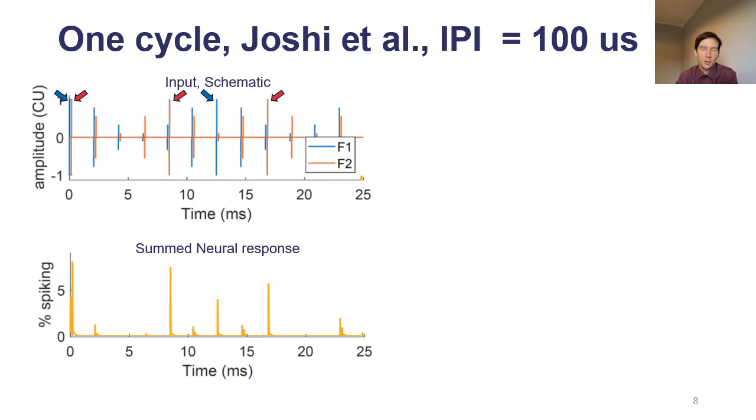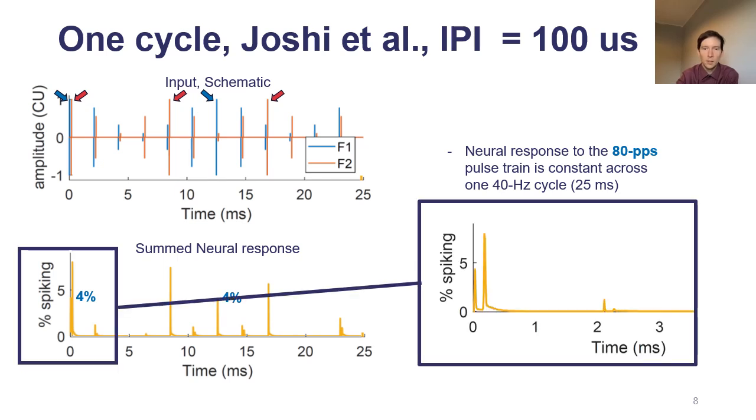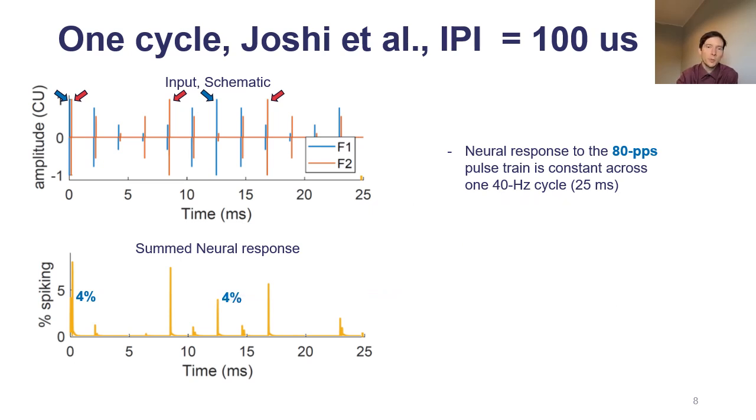For the blue, the 80 pulses per second pulse train, there's two peaks in the 25 ms cycle, and the neural response is actually pretty similar at both peaks, about 4% of the neurons spiking. Actually, for the first peak it's a bit hard to see because of the response to the other pulse train, but when you zoom in you can see it's about 4% of the neurons spiking.